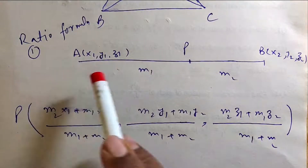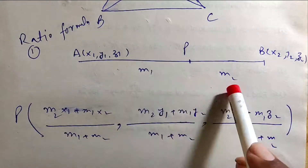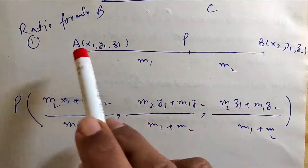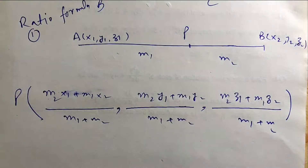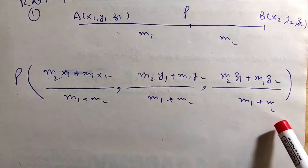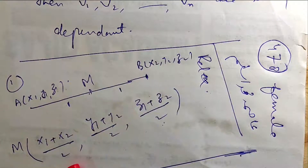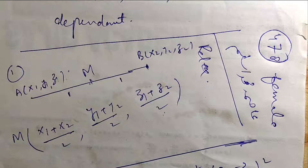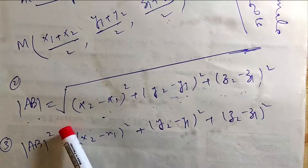The Section Ratio Formula: if point A has coordinates x1, y1, z1 and point B has coordinates x2, y2, z2, and point P divides in ratio M1:M2, then P's first component is M2·x1 plus M1·x2 over M1 plus M2. Similarly for y and z. The midpoint formula is derived by setting M1=M2=1, giving x1 plus x2 divided by 2, y1 plus y2 divided by 2, z1 plus z2 divided by 2 — add both components and divide by 2.